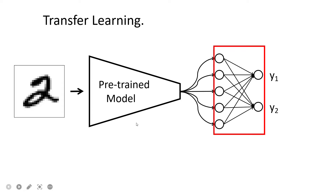The learning has been transferred in the sense that this model was trained on a very large and diverse dataset, so it can extract very good features. We only need to train the new final layer, which means our training time will reduce and we can get accuracy even on difficult datasets for which we don't have the compute power to train from scratch.